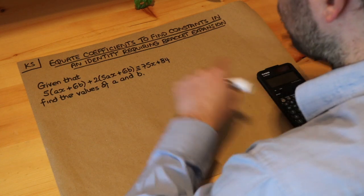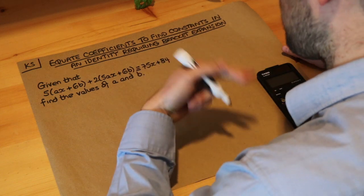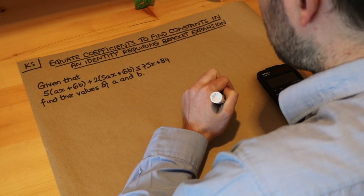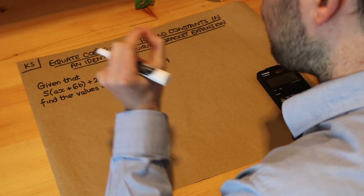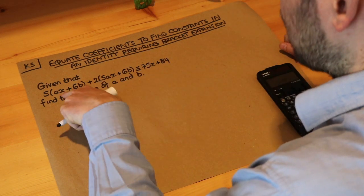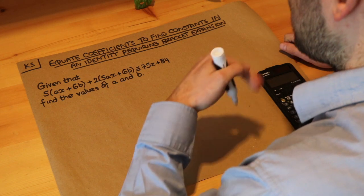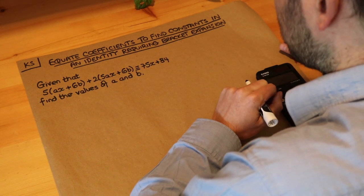Now in the previous video we saw what was meant by an identity and I'm not going to completely go over it again, but it basically means that this equation is true for all values of the variable. In this case x, x is the variable, it's true for all possible values of x.